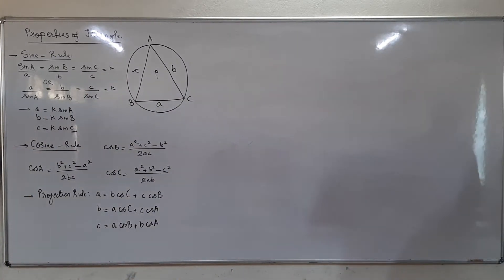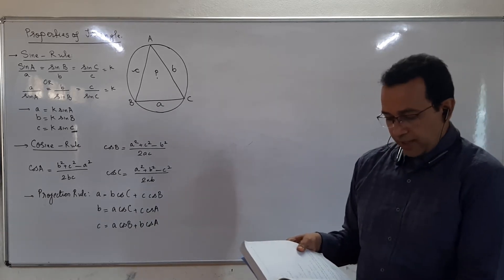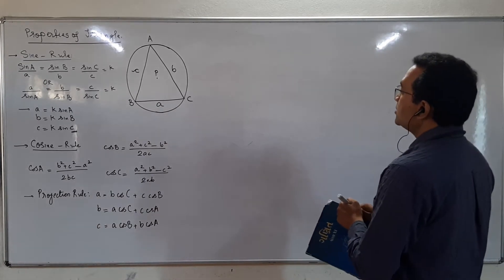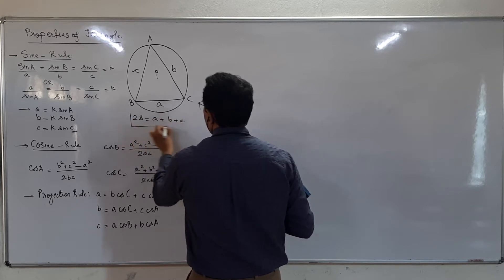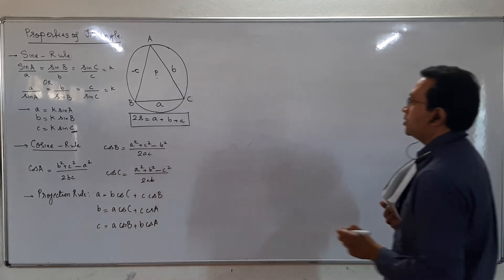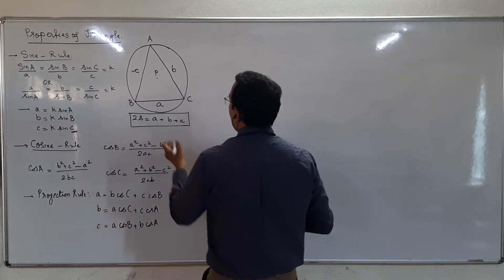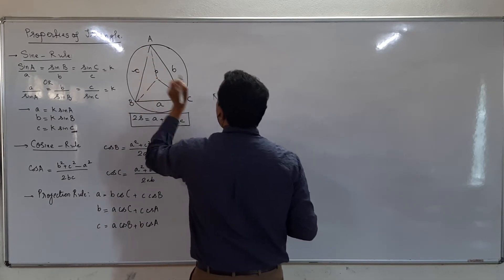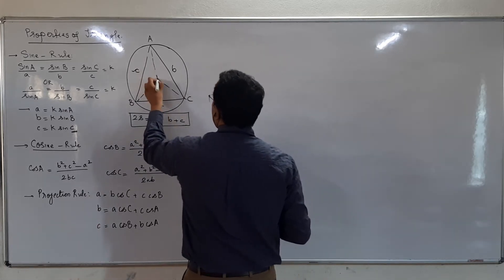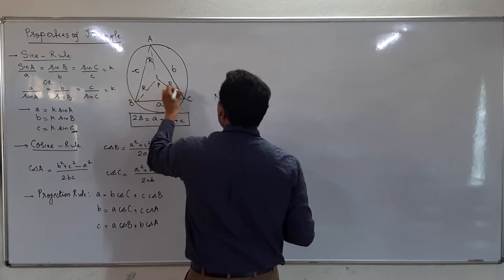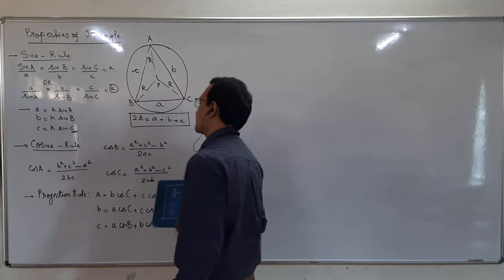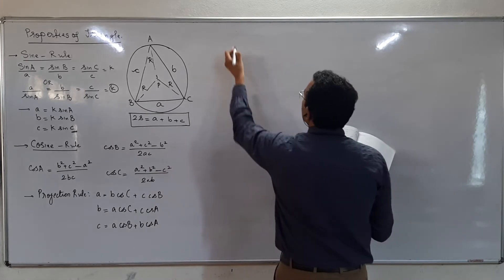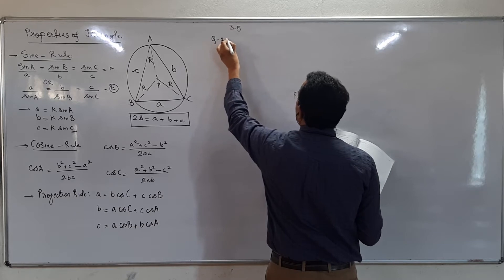Let us start the sums of Exercise 3.5. For any triangle, the perimeter notation is 2s equals a plus b plus c — you have already studied this in Heron's formula in standard nine. One more notation: the circumradius is denoted by capital R. This constant k in the sine rule is equal to the diameter of the circle, which is 2R.